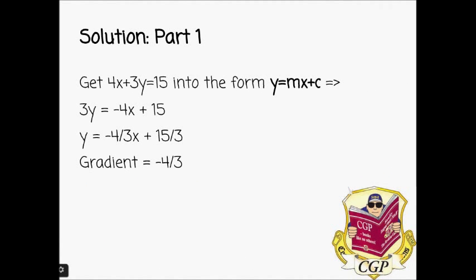So to get the gradient for the first part, I'm just going to do this in the first slide. We're going to write down the equation here: 4X plus 3Y equals 15. Firstly we're going to rearrange it to get it into this Y equals MX plus C form. So that gives us 3Y equals minus 4X plus 15.